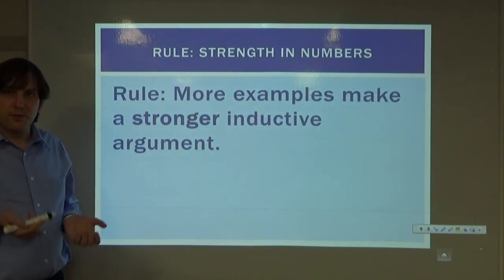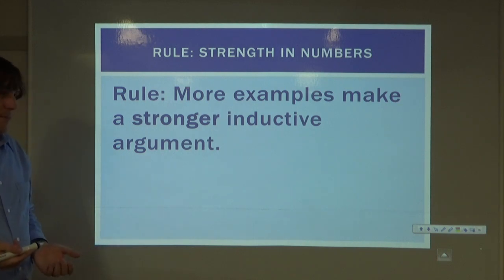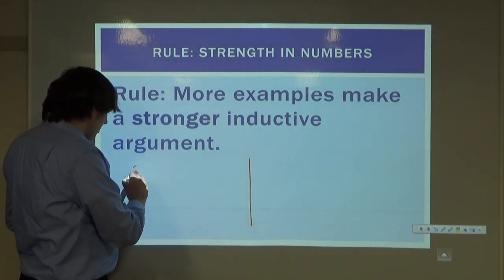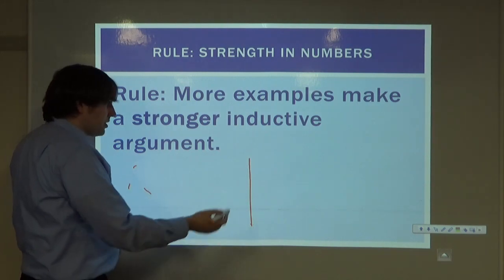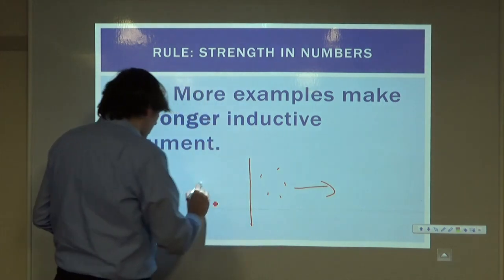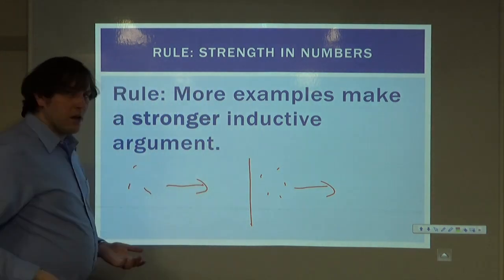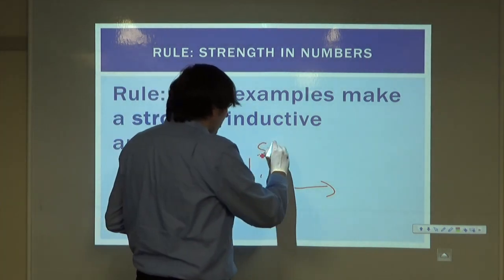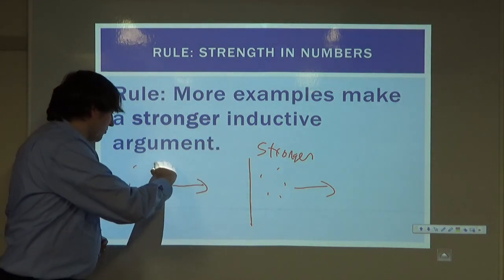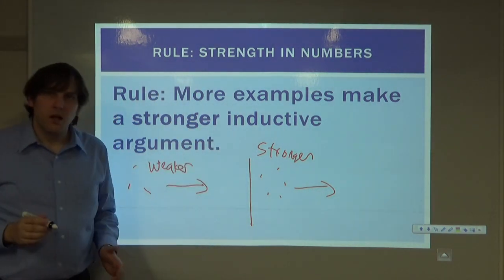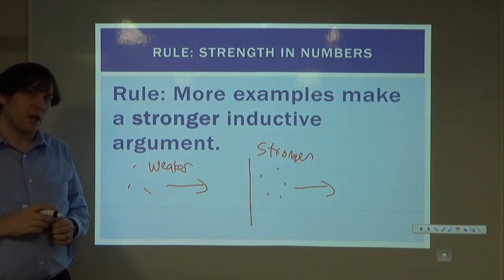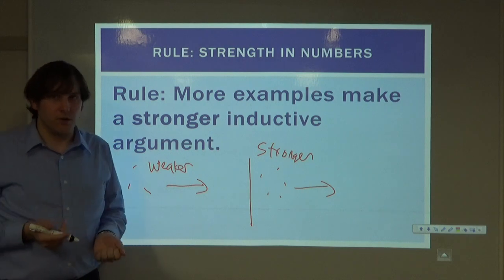Rule: the more examples we have, the stronger our inductive argument. If we have two arguments — one with three supporting instances and one with five — everything else being equal, five instances provides stronger support than three. The argument with fewer instances is the weaker one.